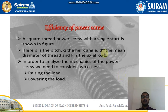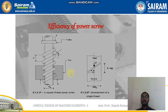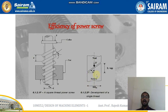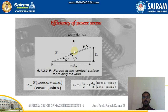Next is the efficiency of the power screw. A square-threaded power screw with a single start is shown in the sketch, where p is the pitch, alpha is the helix angle, dm is the mean diameter of the thread, and f is the axial load. To analyze the mechanics of the power screw we consider two cases: raising the load and lowering the load. The development of a single thread is considered, where the distance is measured as π·dm.